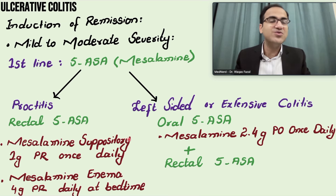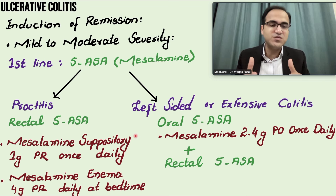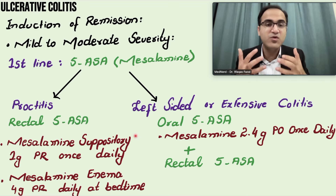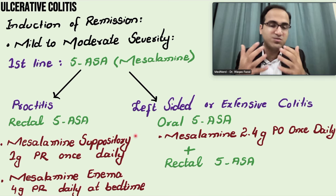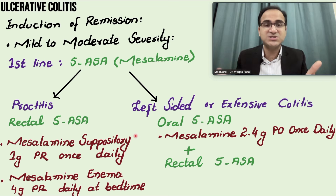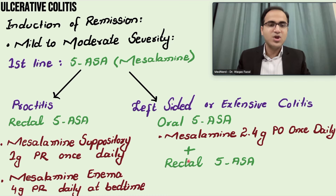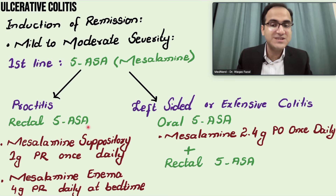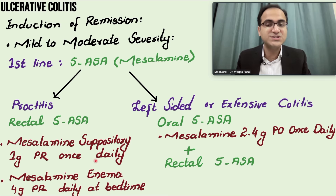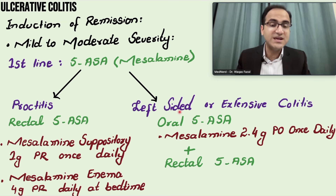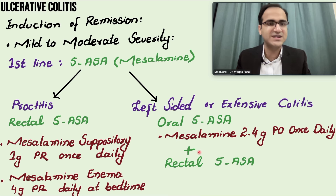A common problem is that patients refuse treatment with suppositories and enemas. Patient preference is kept in mind — in such cases, you can start oral treatment alone. To summarize: if a patient has proctitis, give rectal mesalamine as suppositories or enema. If the patient has left-sided or extensive colitis, give oral mesalamine combined with rectal mesalamine.